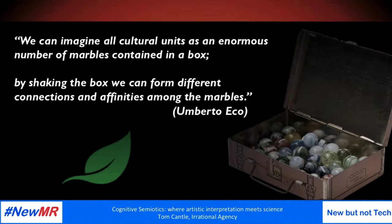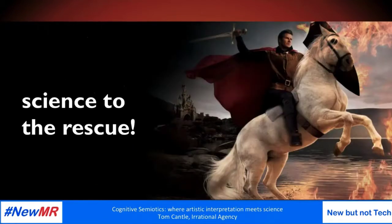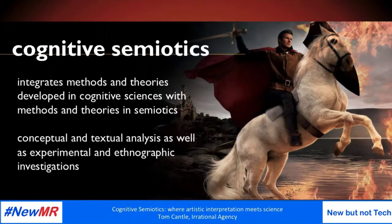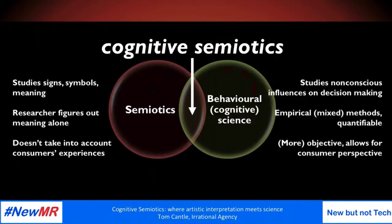This infinite option for interpretation has been known about for a long time. Umberto Eco said: 'We can imagine all cultural units as an enormous number of marbles contained in a box. By shaping the box, we can form different connections and affinities among the marbles.' So you've always got the ability to make anything linked to another thing without a guideline or a framework in place.